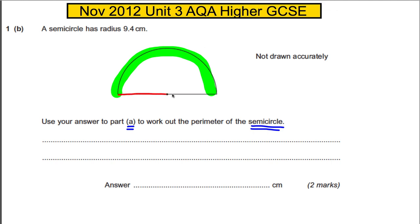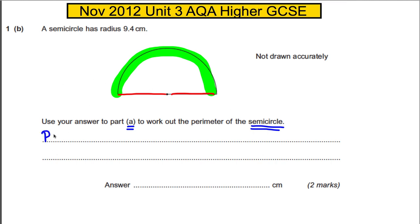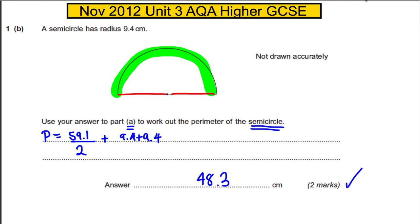To find the full perimeter of the semicircle, we need to add on the two radii as well — it's not just the curved distance. So the perimeter is 59.1 divided by 2, then add 9.4 plus 9.4. That gives you 48.3 centimeters for two easy marks, and we're done with question one.